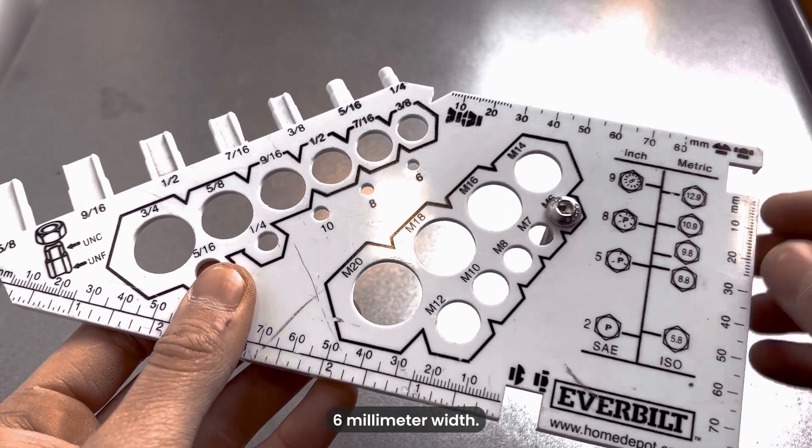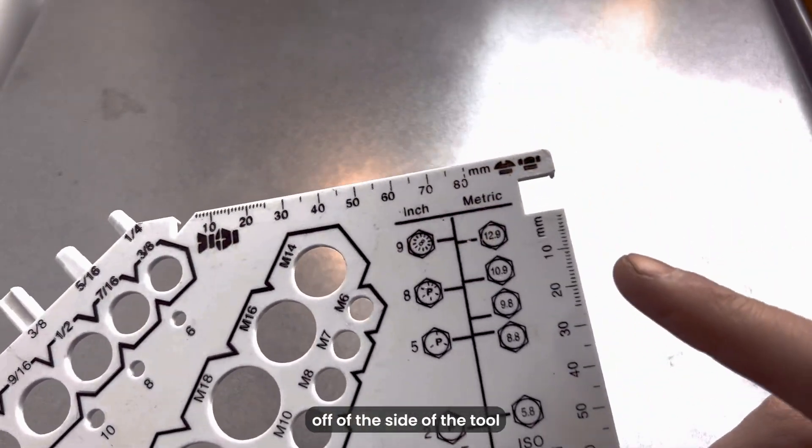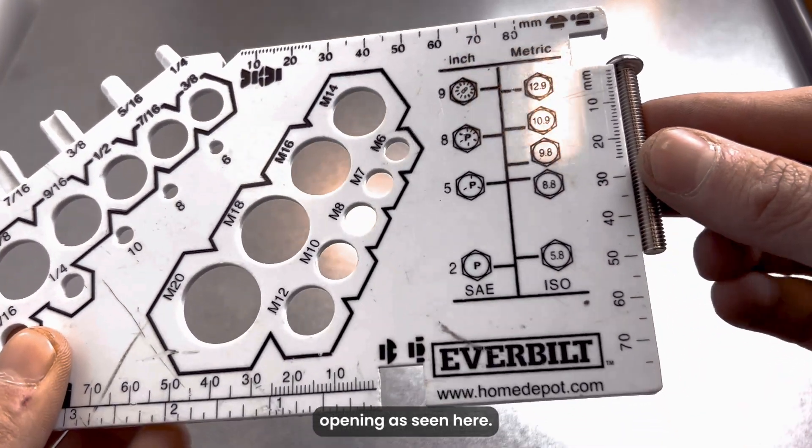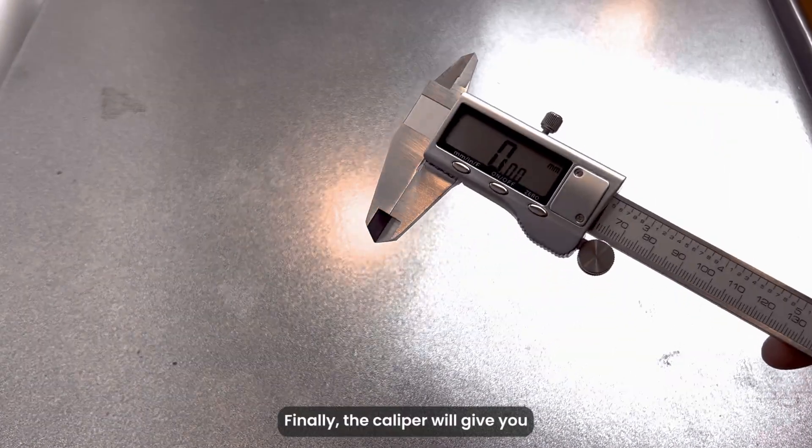For the length, just move the bolt off to the side of the tool and use the built-in ruler, lining up the bolt flange on top of the small opening as seen here. In this case it comes out to the same 50 millimeters as before. Finally, the caliper will give you the most accurate measurements out of all three tools.